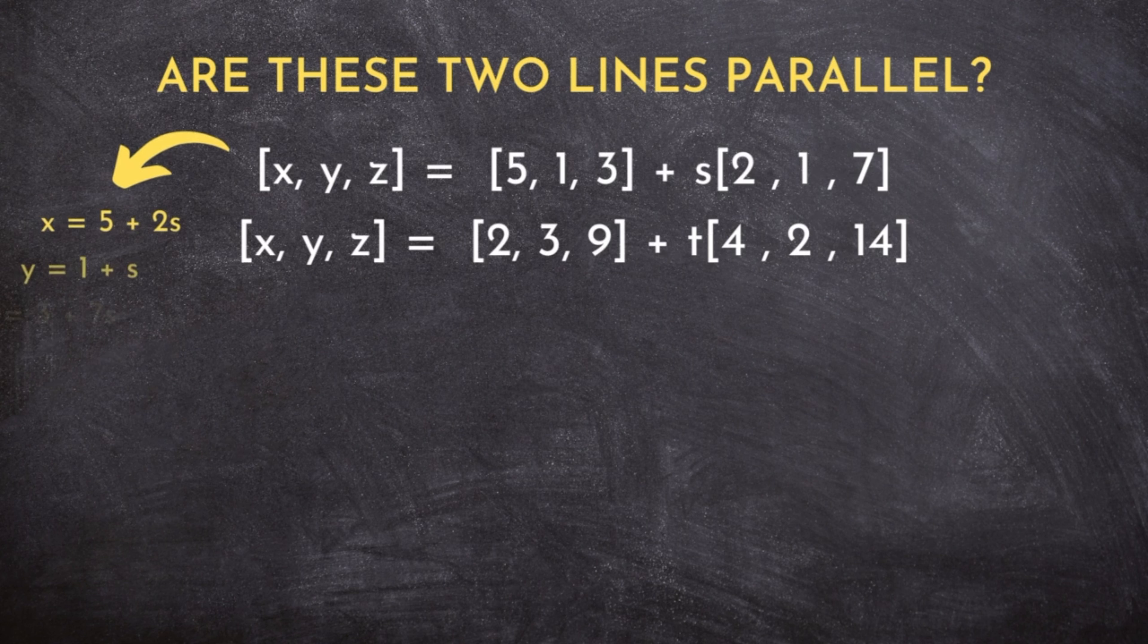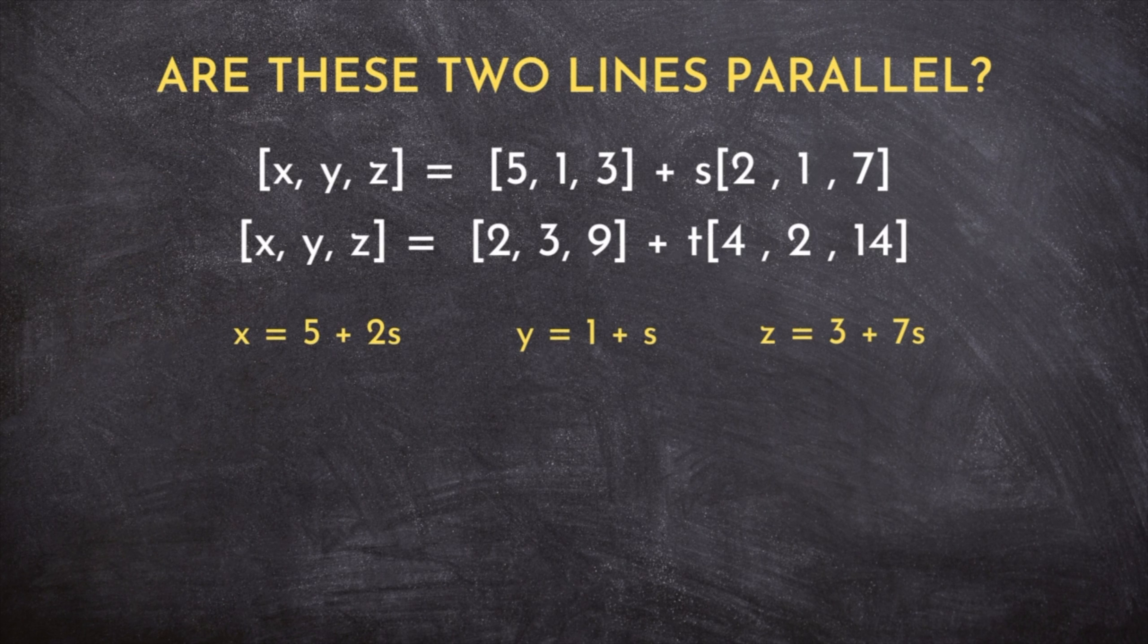We're going to choose this first equation, and we're going to rewrite it in parametric form. Remember, we take each x, y, and z and equate them to create parametric equations. Now, since we chose this equation, we'll choose this point and sub it in for x, y, z in our parametric equations.